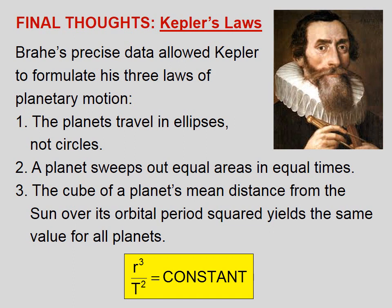Final thoughts on Kepler's laws: Brahe's precise data allowed Kepler to formulate his three laws of planetary motion. 1. The planets travel in ellipses, not circles. 2. A planet sweeps out equal areas in equal times. 3. The cube of a planet's mean distance from the sun over its orbital period squared yields the same value for all planets.